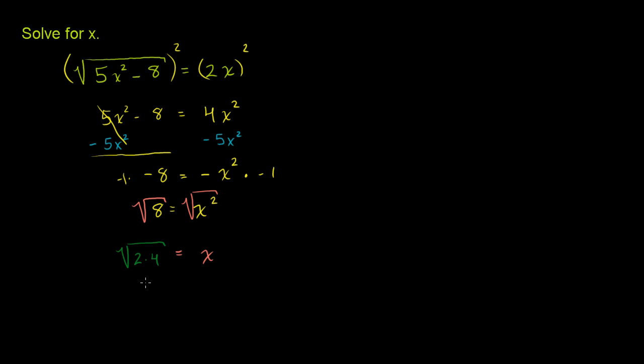And this can be rewritten as the square root of 2 times the square root of 4 is equal to x. And what's the square root of 4? The principal root of 4 is 2.